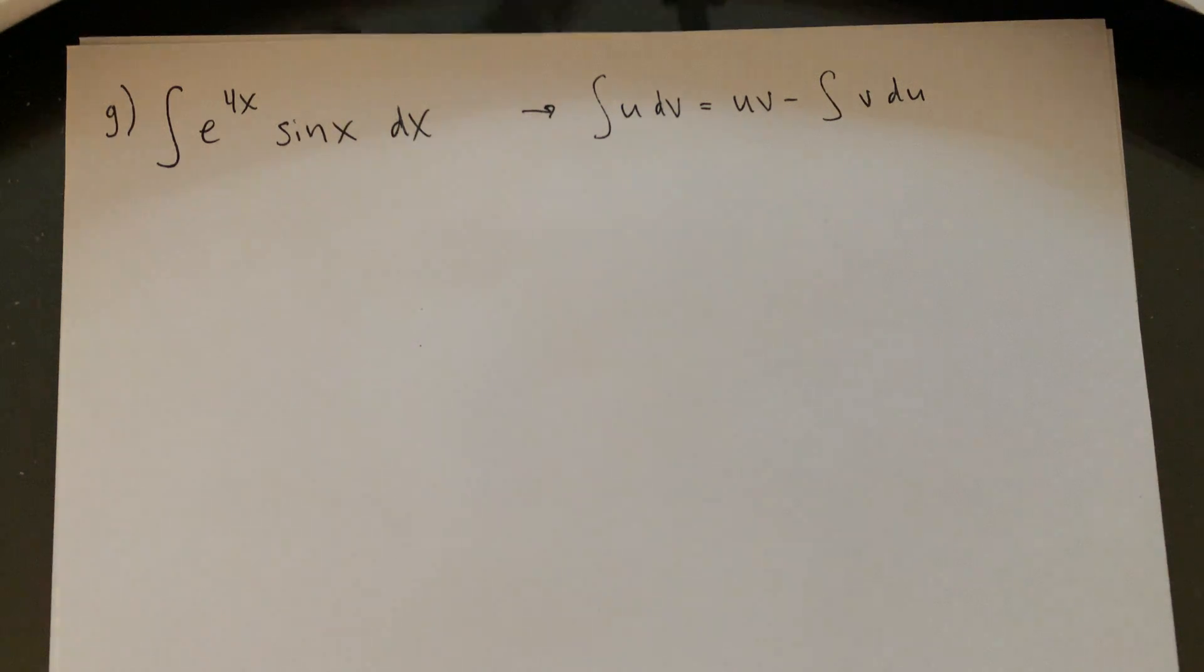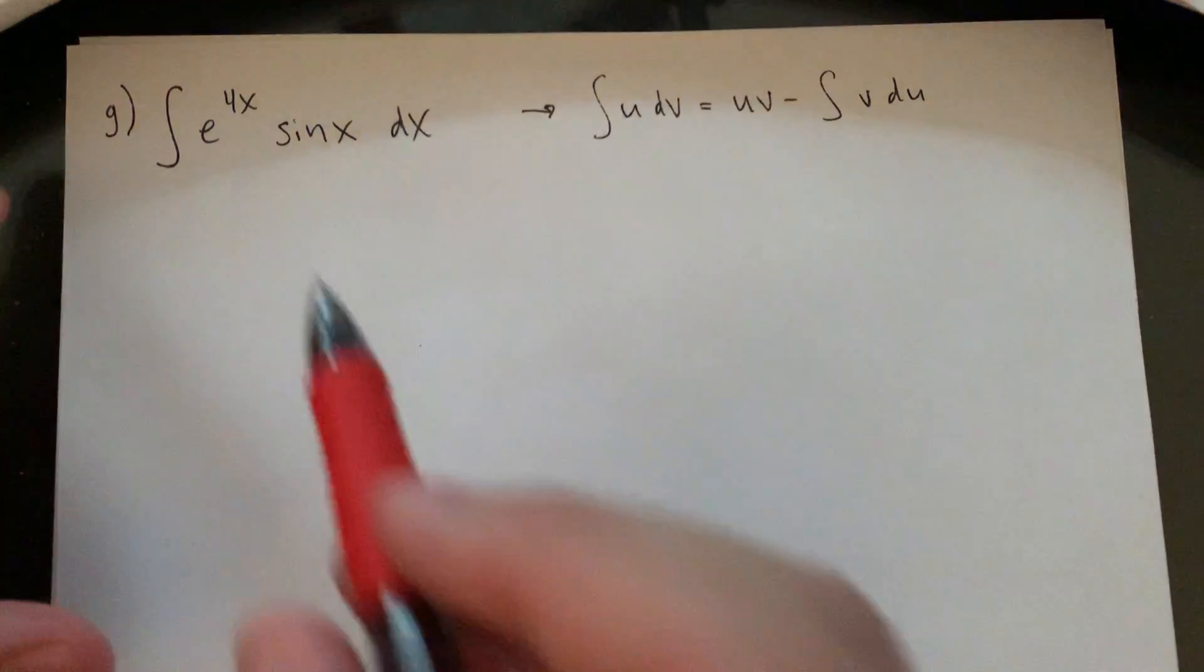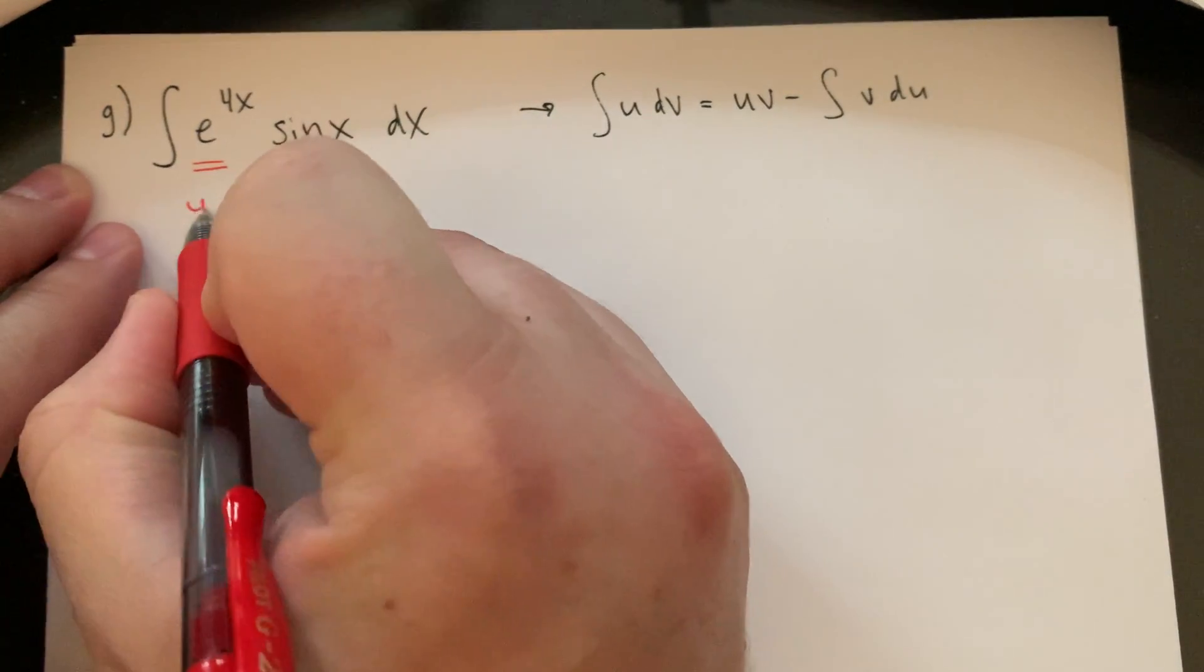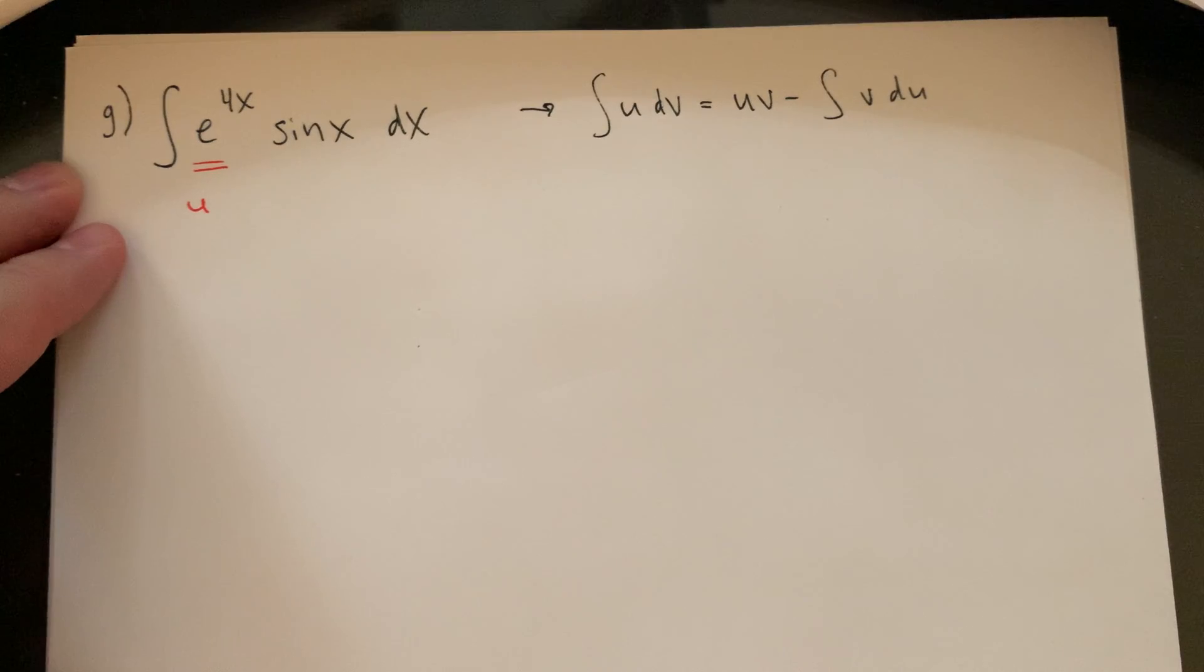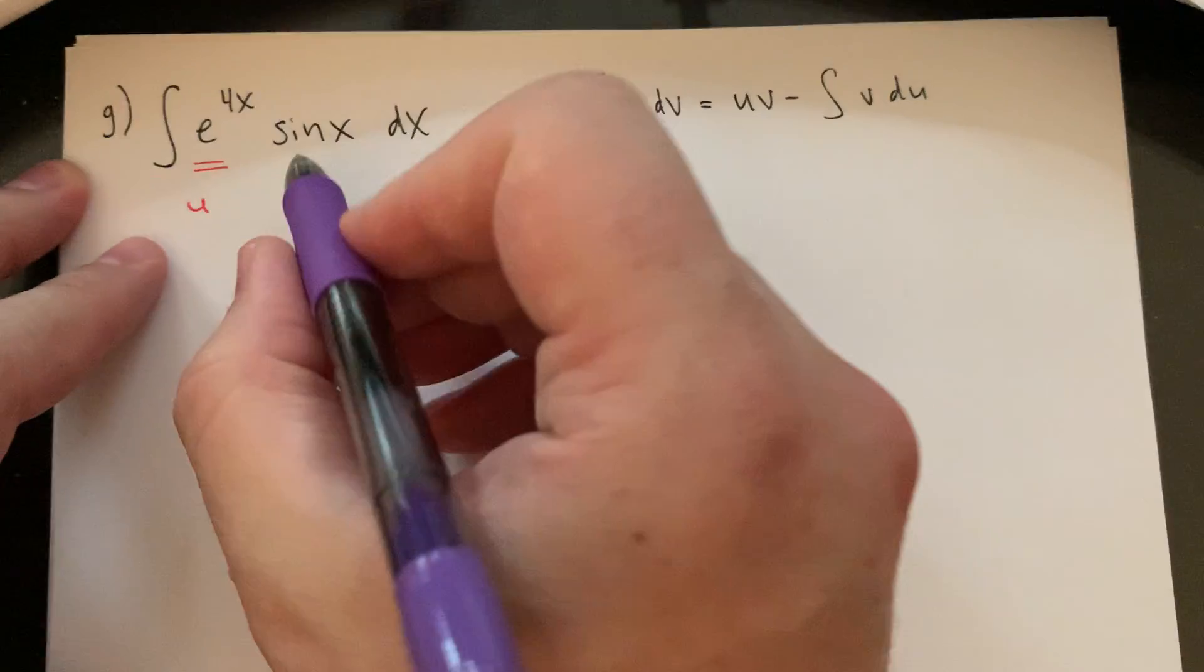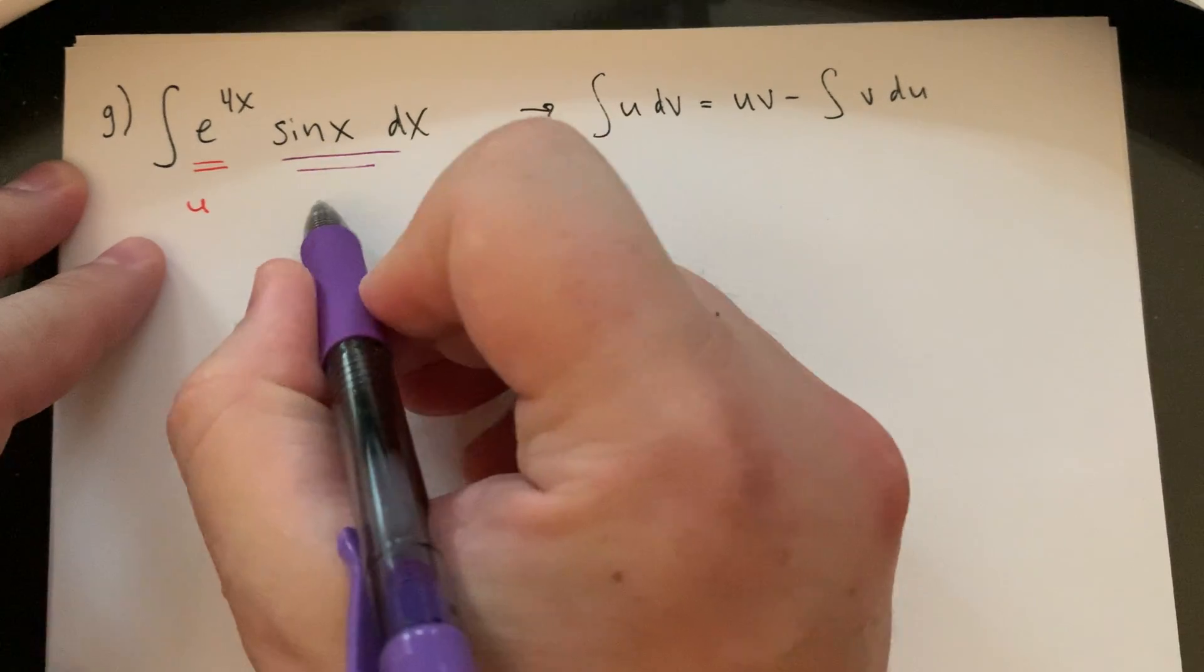So as far as picking a u and picking a dv here, in theory you could do either. You could have e to the 4x be u or be part of the dv. You could have sine be u or have sine be part of the dv. Either works. The one thing I'll say is with the 4x up top, I'm going to include that in the u so that I'm taking a derivative of this where we have the chain rule rather than needing this implied u sub.